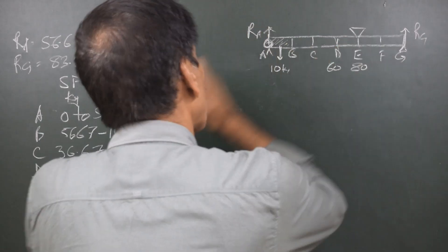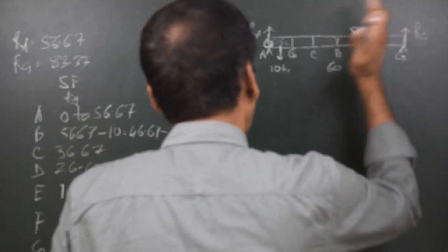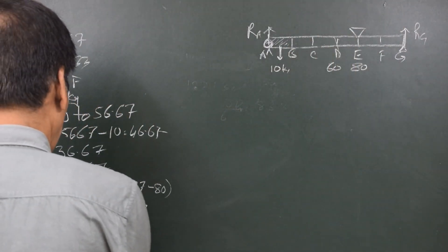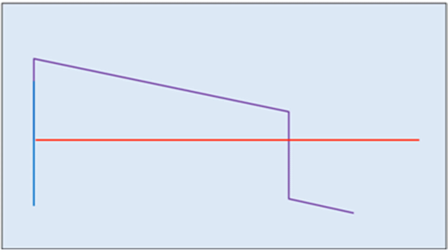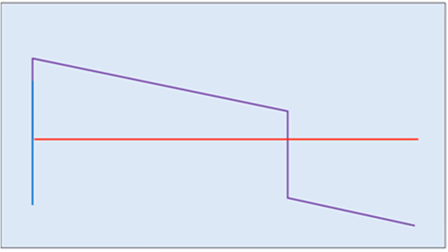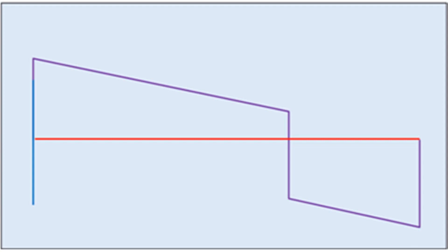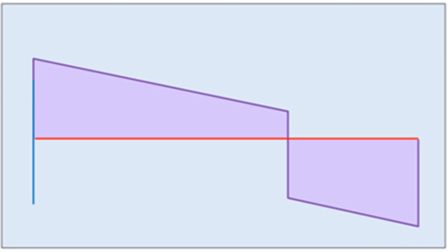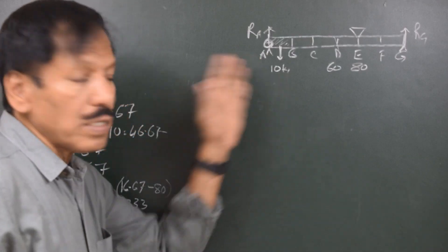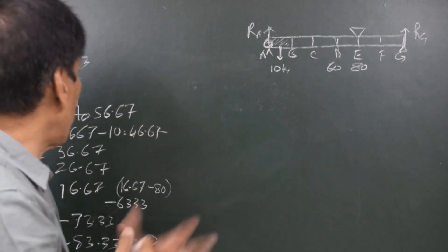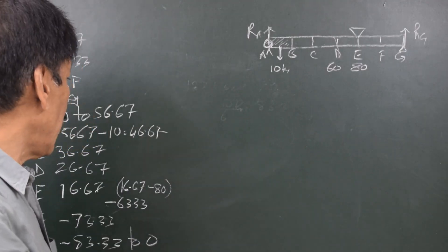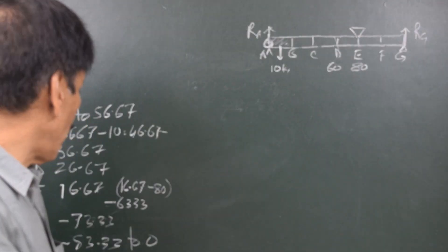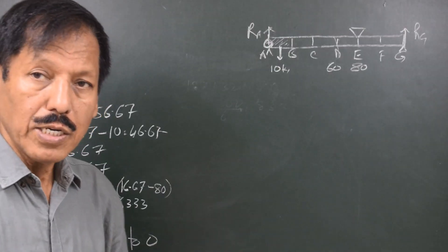Placing the screen at F gives minus 73.33. Slightly to the left of G gives minus 83.33. Shifting the screen slightly to the right of G adds the reaction RG of plus 83.33, so the total becomes minus 83.33 plus 83.33, which equals zero. So the shear force starts at zero before A, jumps to 56.67 after A, and returns to zero after G.